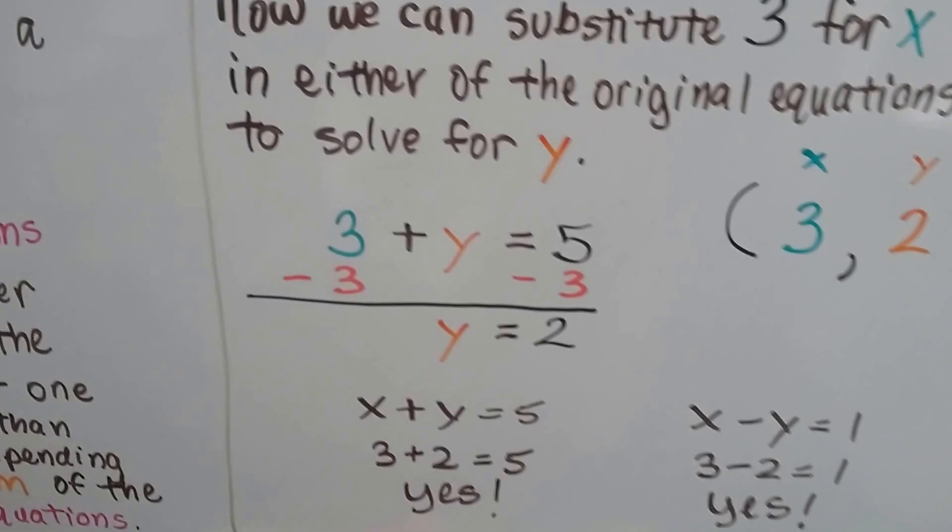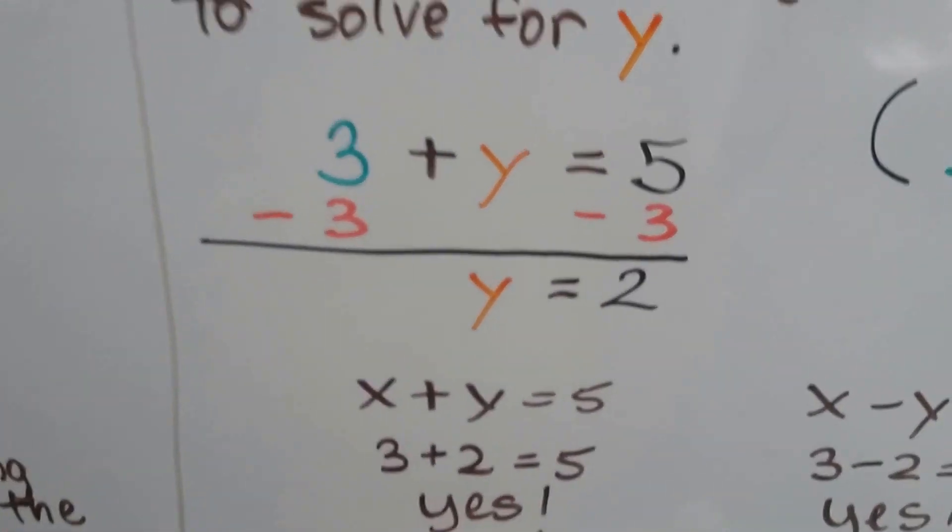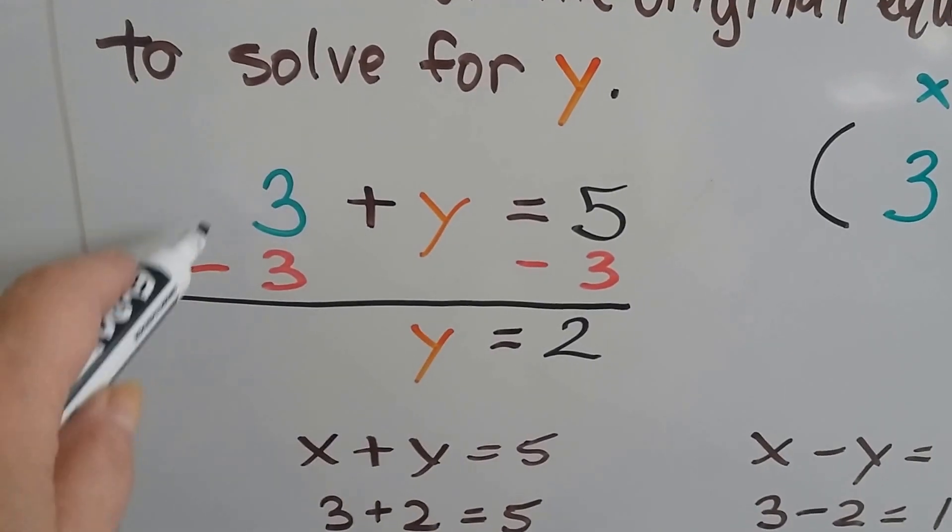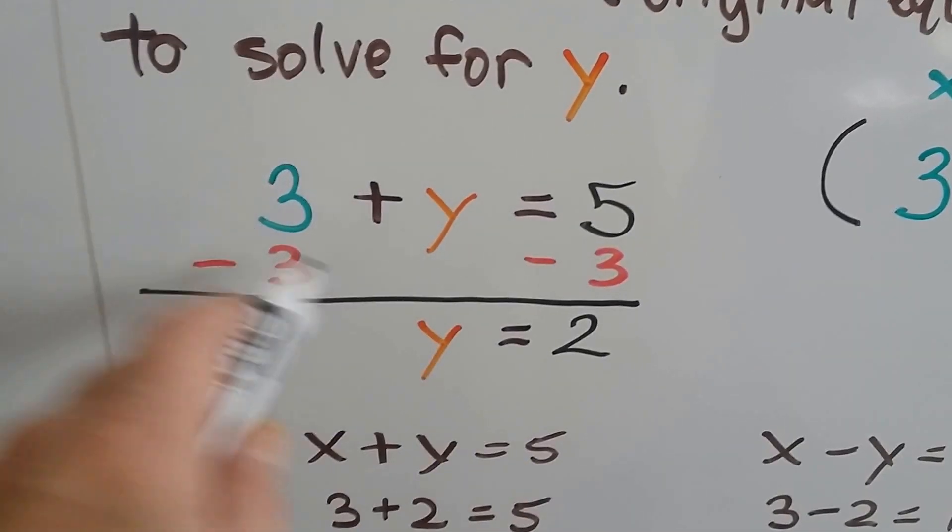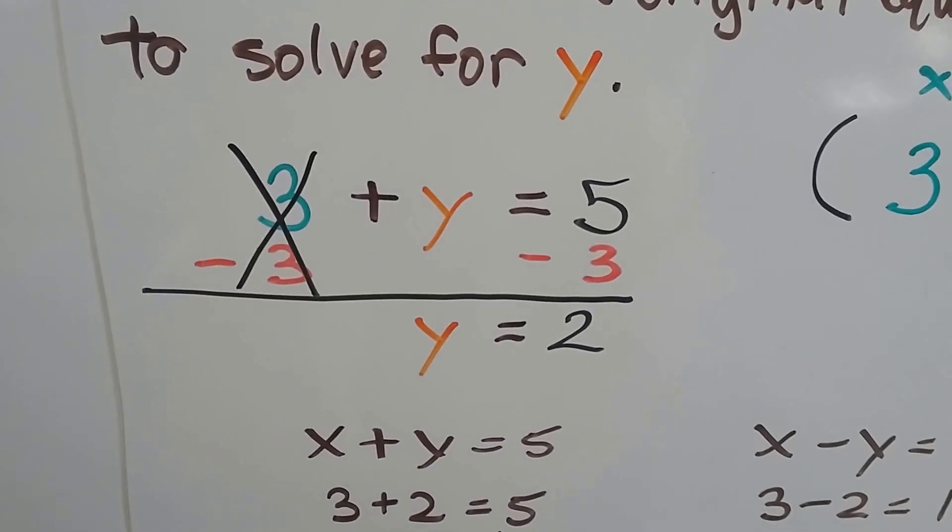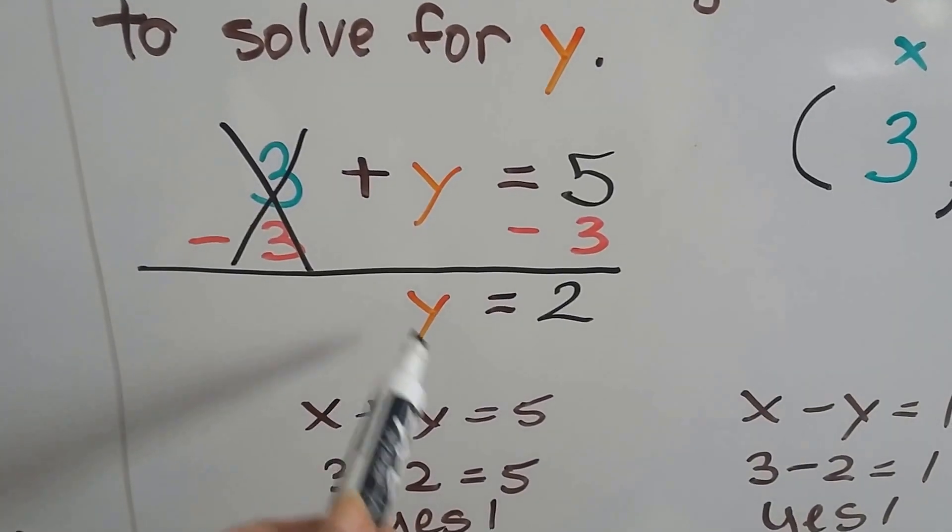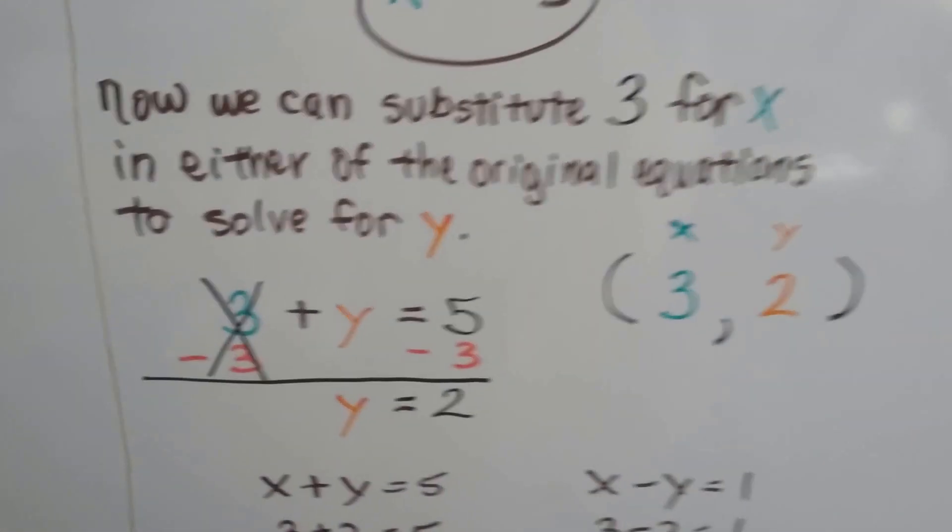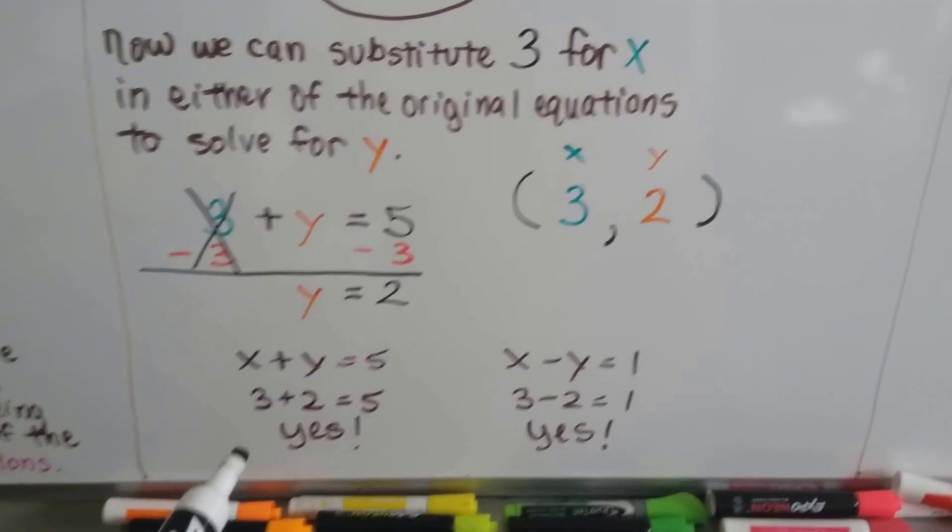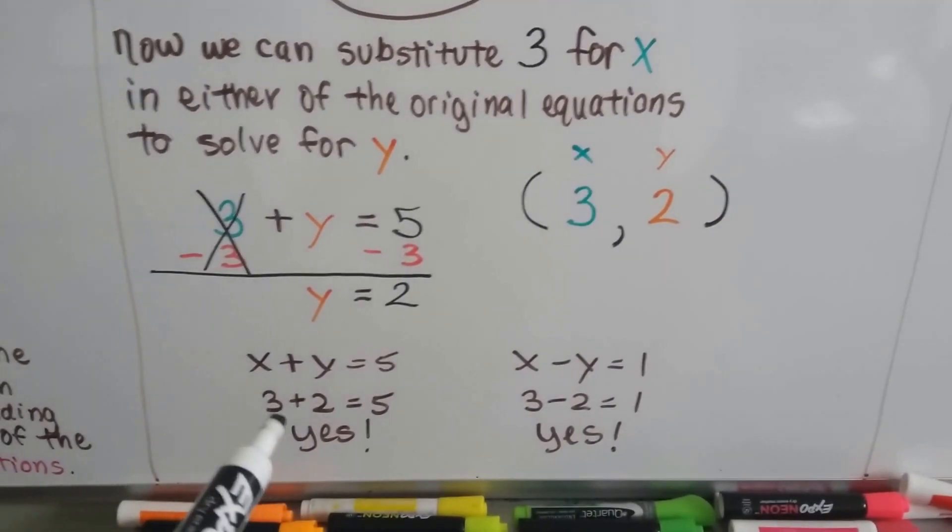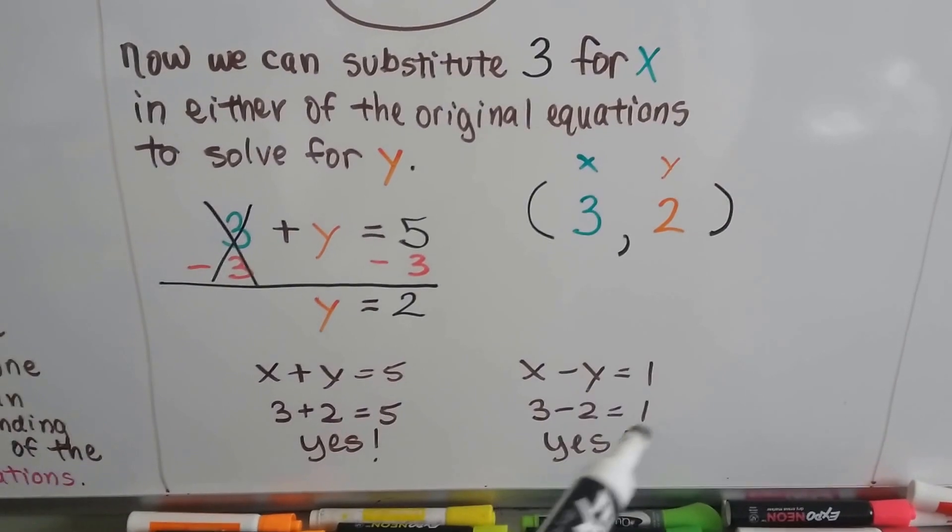Now we need to isolate the y. We need to solve for y. Because it's a +3, we can put a -3 on each side of the equation to get rid of this guy, eliminate it. Now we end up with y = 2. Now we know x is 3 and y is 2. We can plug it in to check it. 3 + 2 is 5 and 3 - 2 is 1. Yeah, it worked.